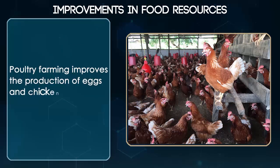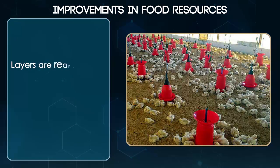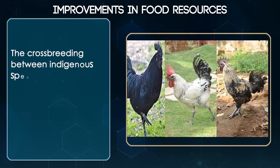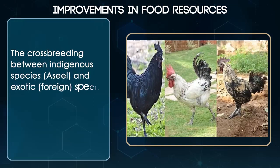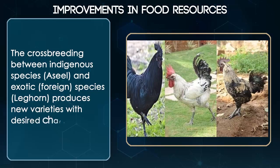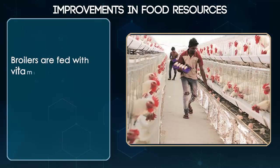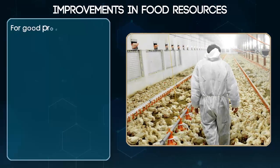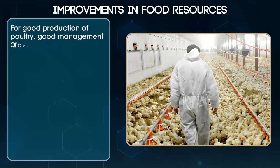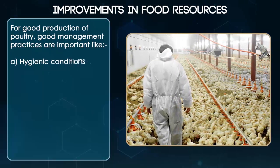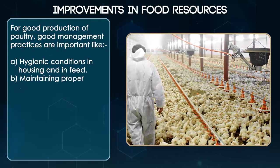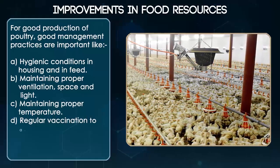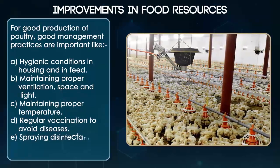Poultry farming improves the production of eggs and chicken meat. Layers are raised for eggs and broilers for meat. Cross-breeding between indigenous species and exotic species produces new varieties with desired characters. Broilers are fed with vitamin-rich supplementary food which is rich in protein as well as fat. For good production of poultry, good management practices are important: A. Hygienic conditions in house and in feed, B. Maintaining proper ventilation, space and light, C. Maintaining proper temperature, D. Regular vaccination to avoid diseases, E. Spraying disinfectants at regular intervals.